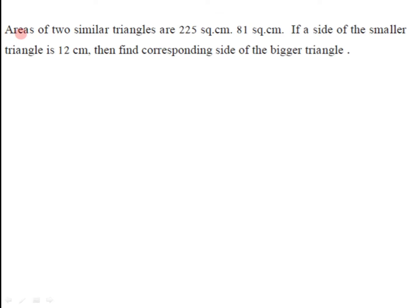The question is: areas of two similar triangles are 225 square centimeters and 81 square centimeters. If a side of the smaller triangle is 12 centimeters, then find the corresponding side of the bigger triangle. The areas of the two similar triangles are given, and from the side of the smaller triangle we have to find the side of the bigger triangle.